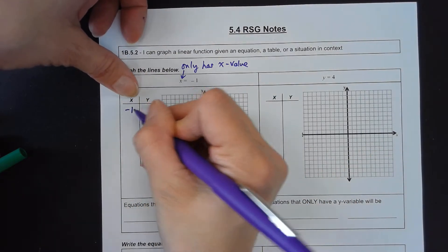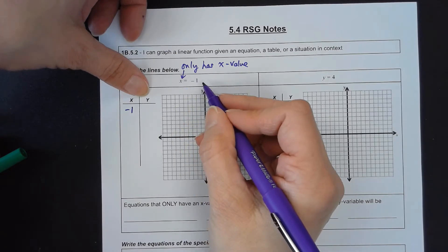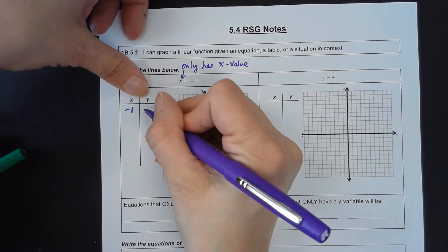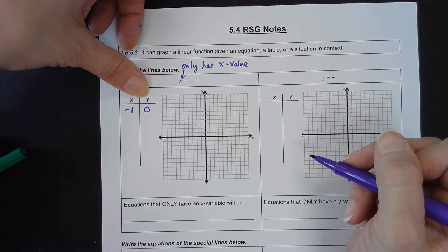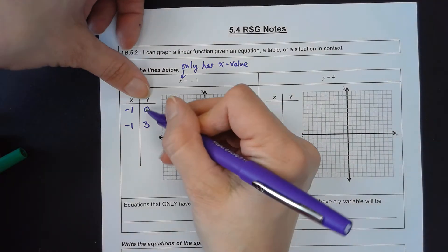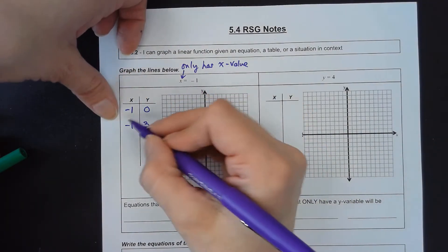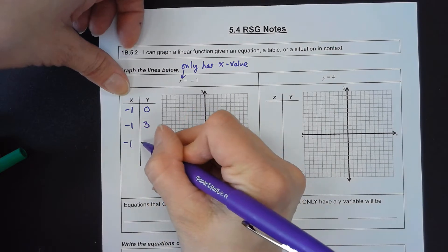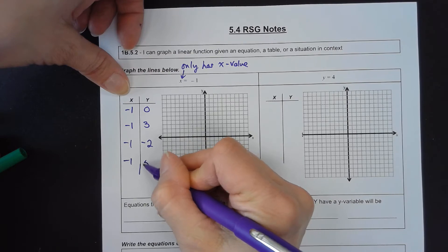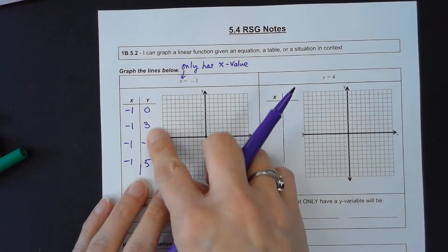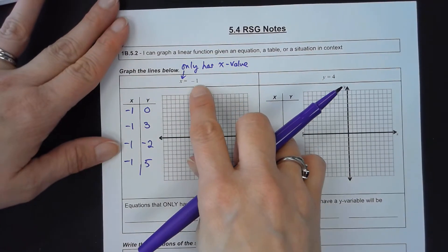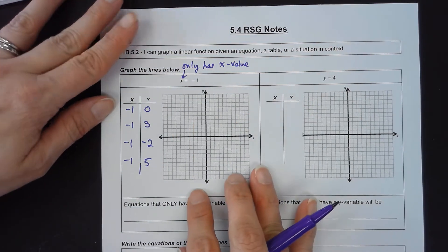I'm going to make the point negative 1 — what's the y number? When I make x negative 1, y could be anything. It could be 0. I'll make another point: negative 1 comma 3. Could the y be any number I want as long as the x is negative 1? Yes — negative 1 comma negative 2, and negative 1 comma 5. So here we have a bunch of points that work in this equation because the only value needed is x equals negative 1.